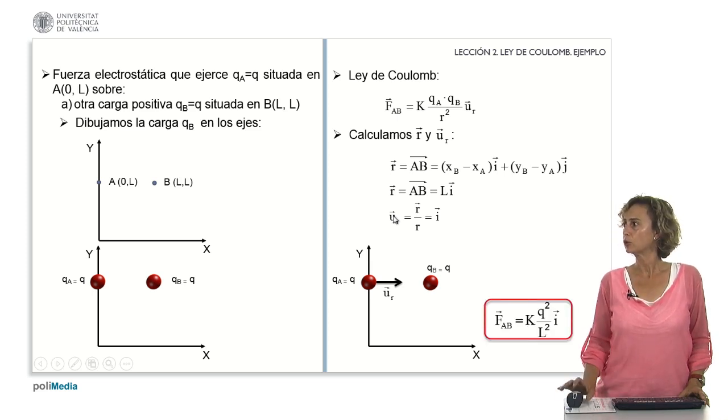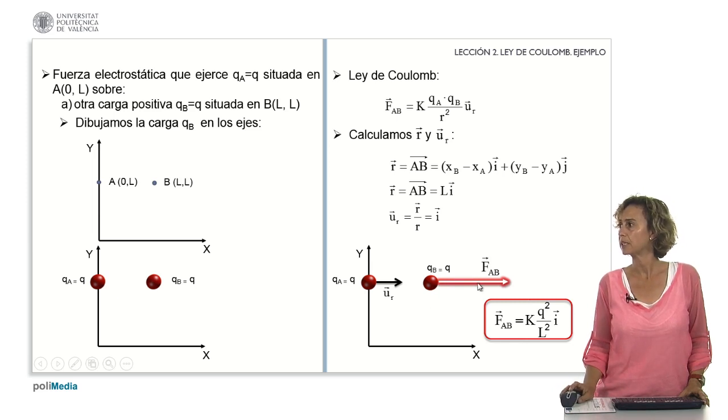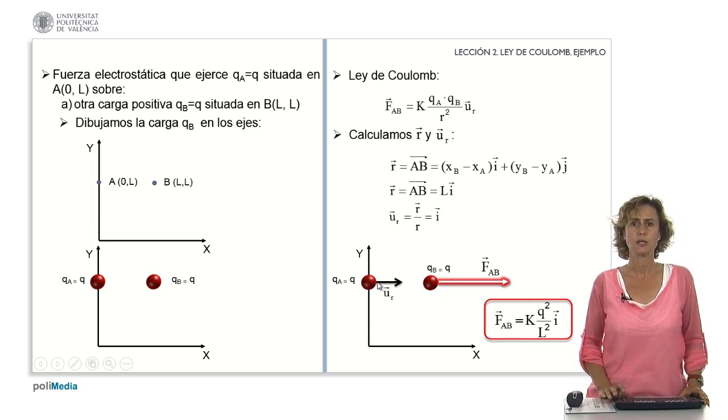Finally, we obtain that the force that A exerts on B is K*Q squared divided by L squared by the unit vector i. We draw the force and we see that this force is repulsive and that U sub R and F have the same sense since the two charges were of the same sign.